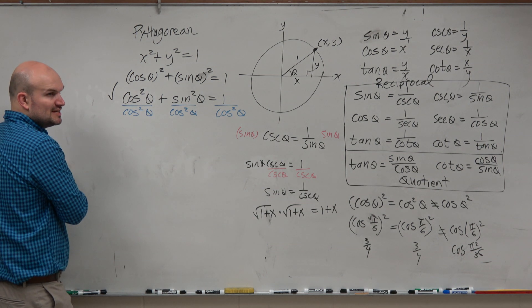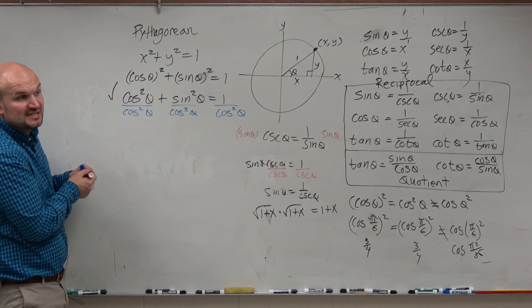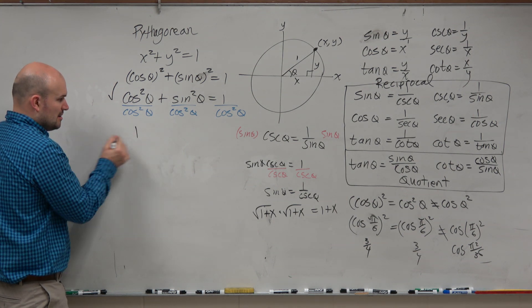So cosine squared of theta divided by cosine squared of theta. Well, guess what? I don't really care what that is. It's the same quantity over the same quantity, right? So that's easy to come up with.